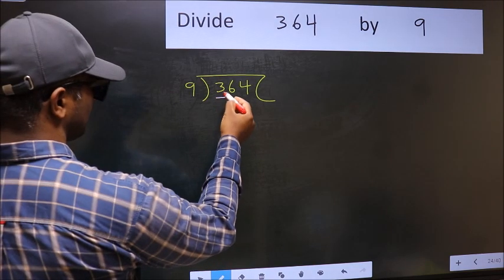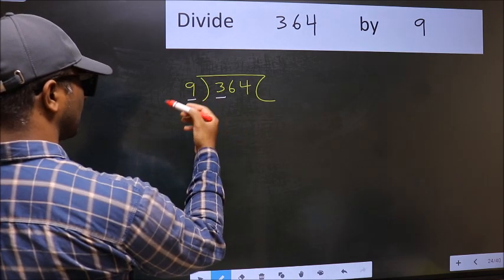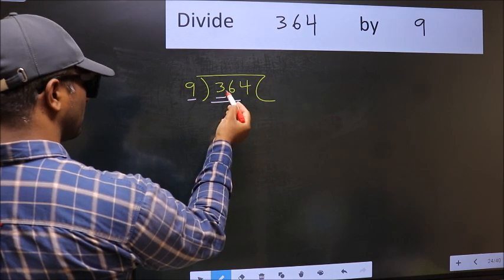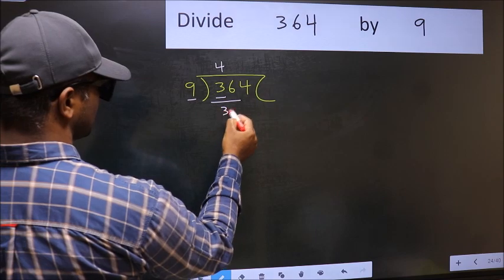Here we have 3 and here 9. 3 is smaller than 9. So we should take 2 numbers, 36. When do we get 36 in 9 table? 9 times 4 is 36.